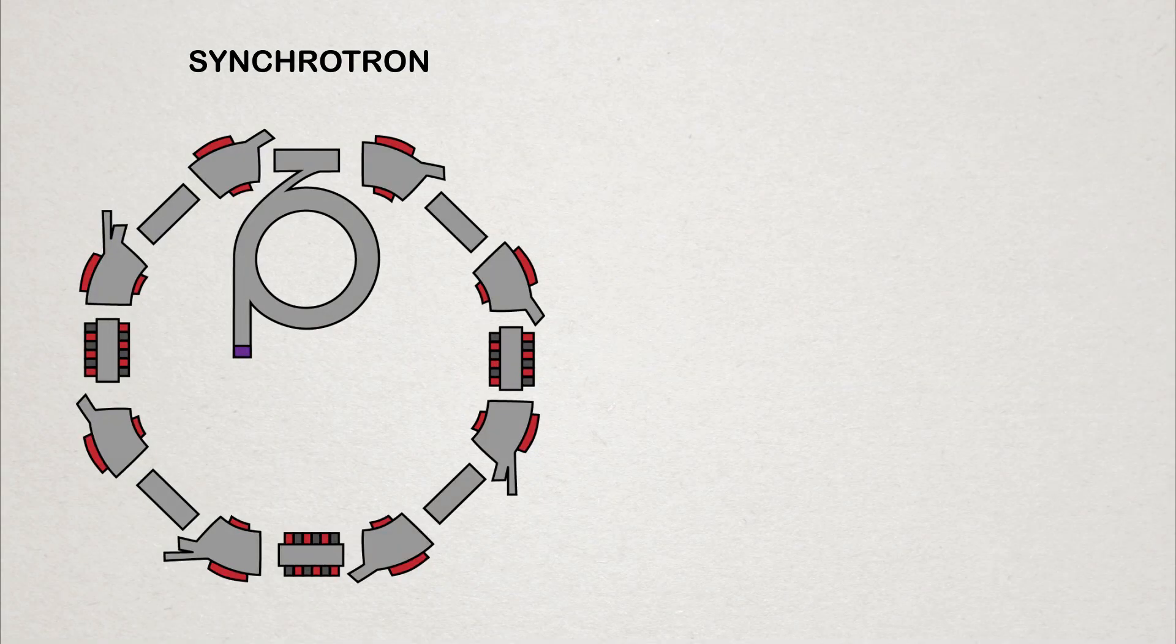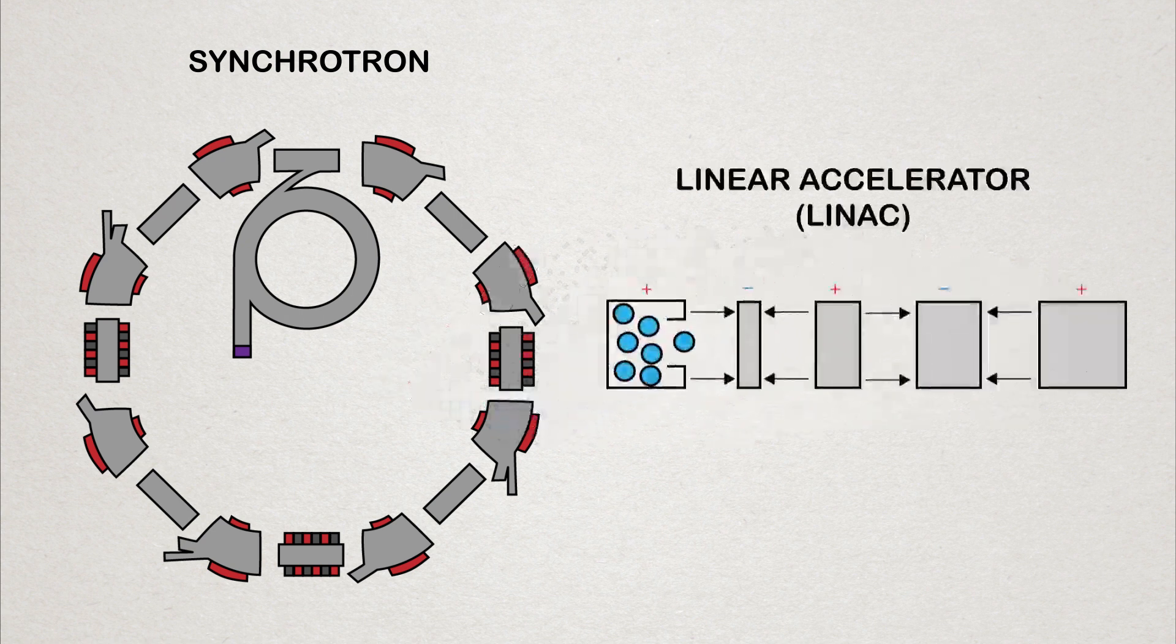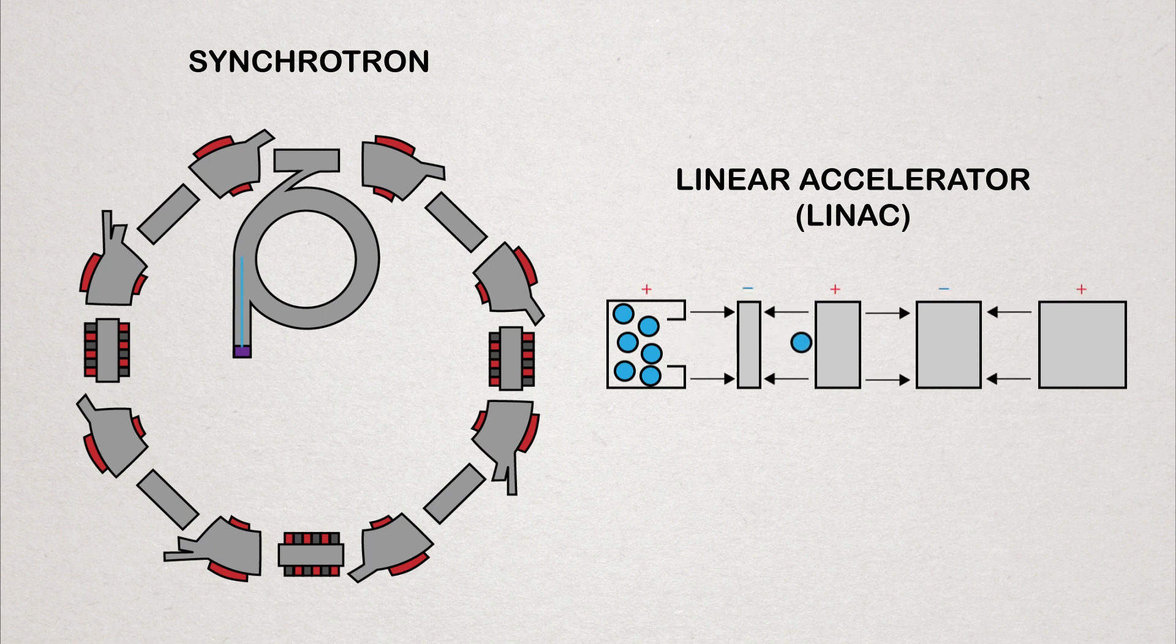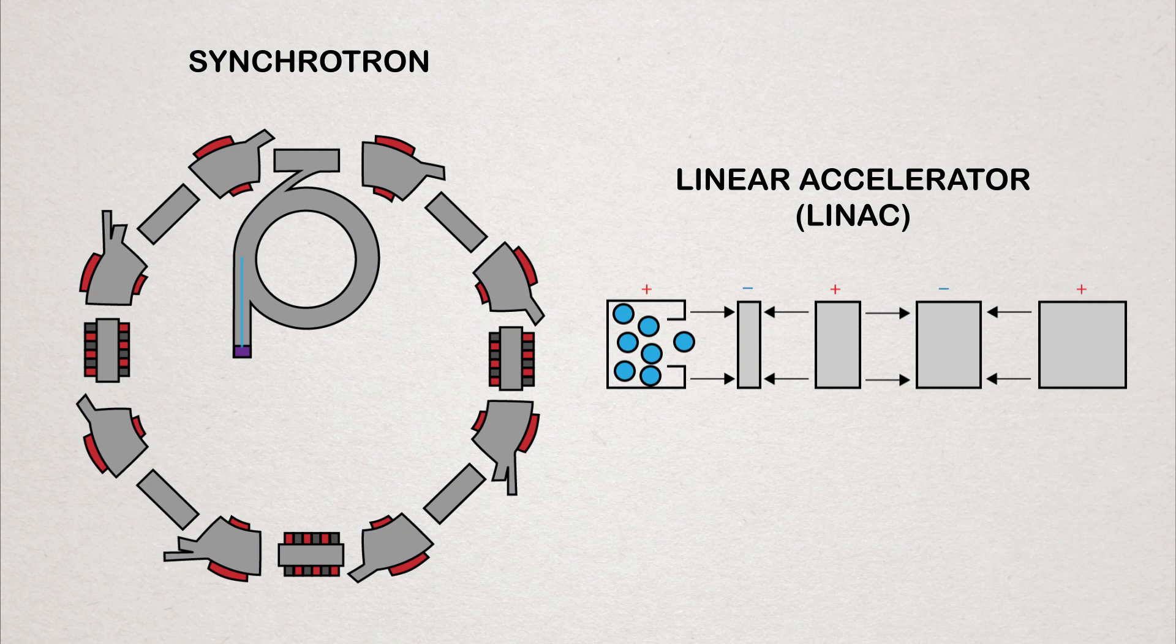This is achieved in a few steps. First, they emit electrons into a linear accelerator, which uses large electric fields to initially give these electrons a significant velocity. The electric field is produced by large capacitors, where the electron is attracted to the positive side and repelled by the negative.